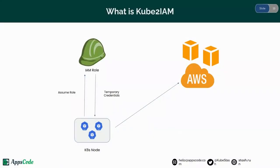Now let's see what Kube2IAM is. Kube2IAM lets you attach IAM roles to the running pods in your Kubernetes cluster. Kube2IAM intercepts calls to the API and, instead of authenticating directly, it will assume the role that has been assigned to the pods via annotation and respond with temporary credentials. In this manner, your pods get access from their annotated roles, and the only permissions needed for your nodes is the ability to assume the roles your pods use.